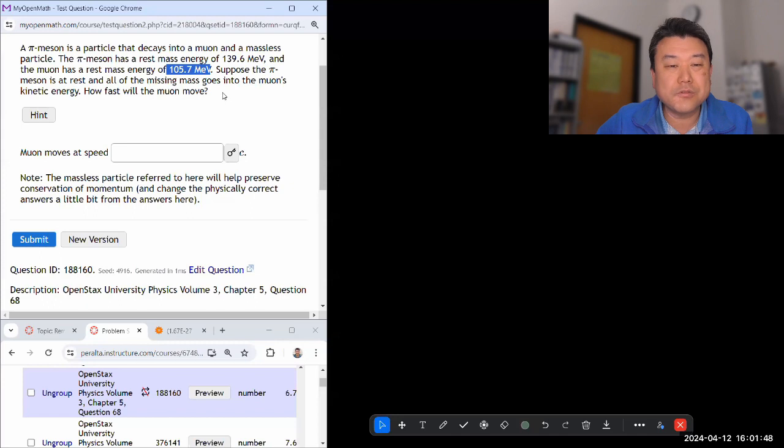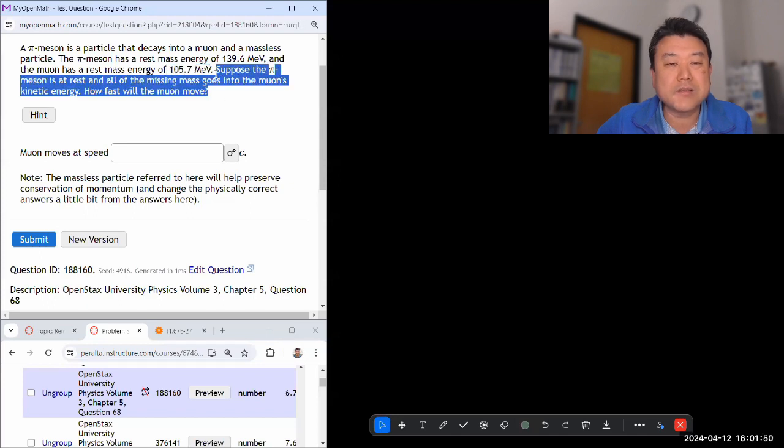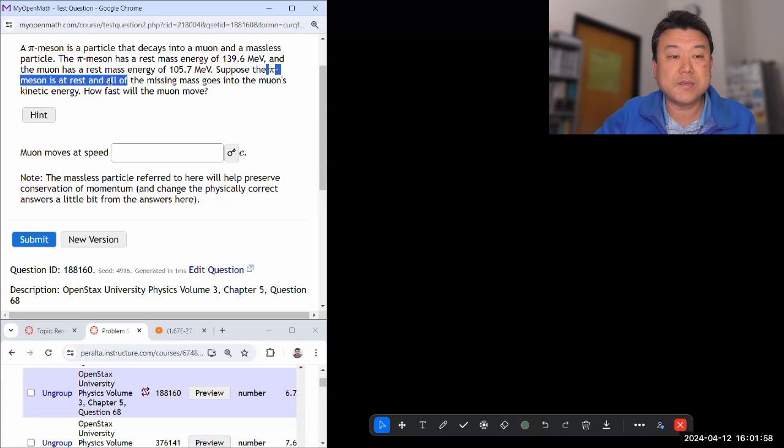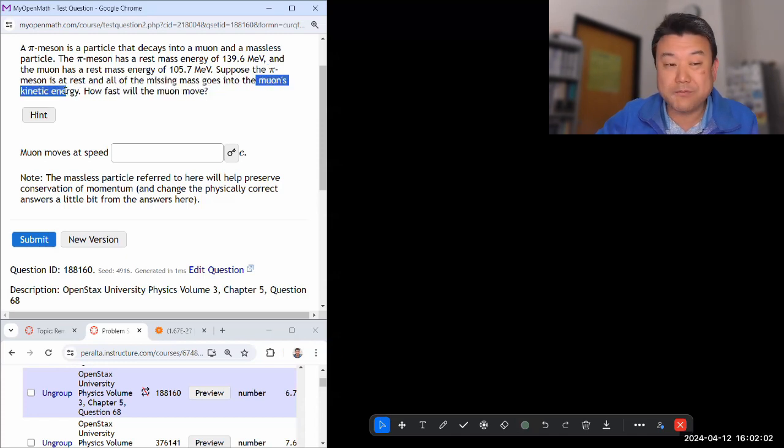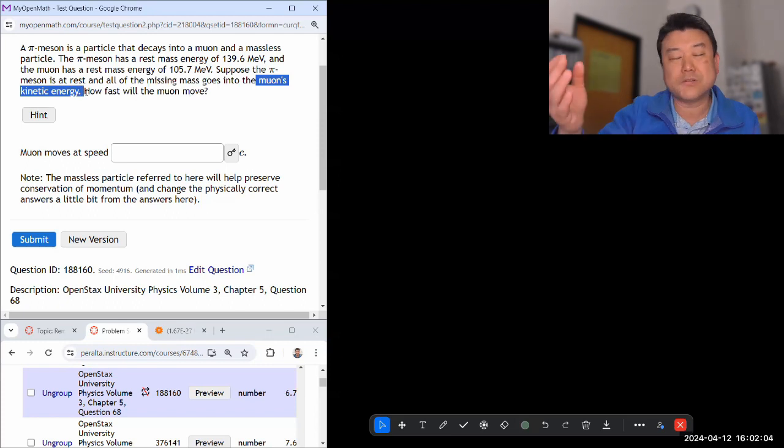So you have to realize that this is a process that doesn't happen because it violates conservation of energy and momentum because if pi is at rest, meaning zero momentum, then muon should also be at rest if it's the only particle to come out of the decay. But we're going to ignore that for now. So I think for the time being, this is all we need.